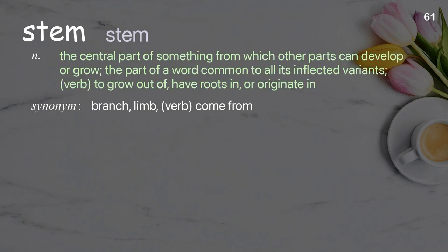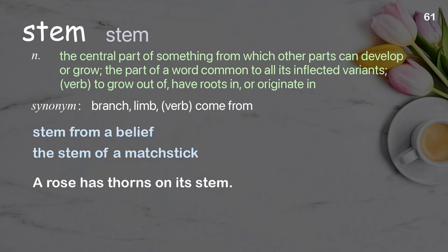Stem: The central part of something from which other parts can develop or grow; the part of a word common to all its inflected variants. Verb: to grow out of, have roots in, or originate in. Examples: Stem from a belief. The stem of a matchstick. A rose has thorns on its stem.